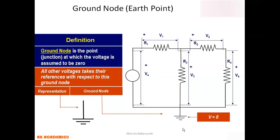If you take this symbol to a circuit, you can see how it is connected. This is the ground node, and the voltage at the ground node is always equal to zero, which is important. We mentioned this in a previous class, and it is important to revisit now that we are discussing nodal analysis.